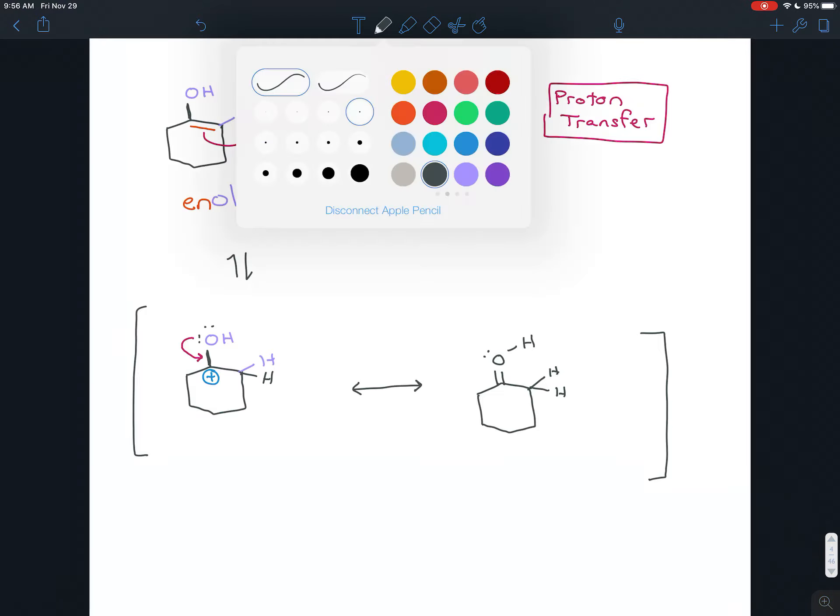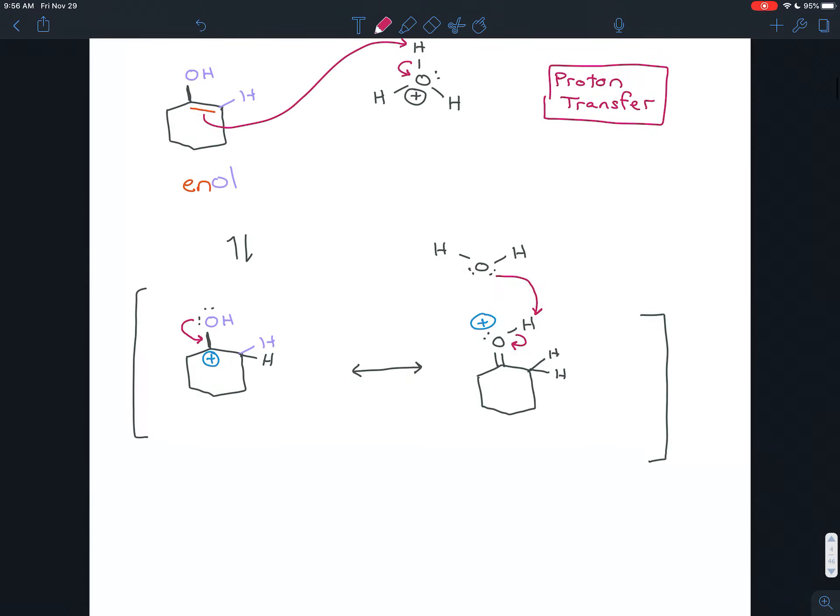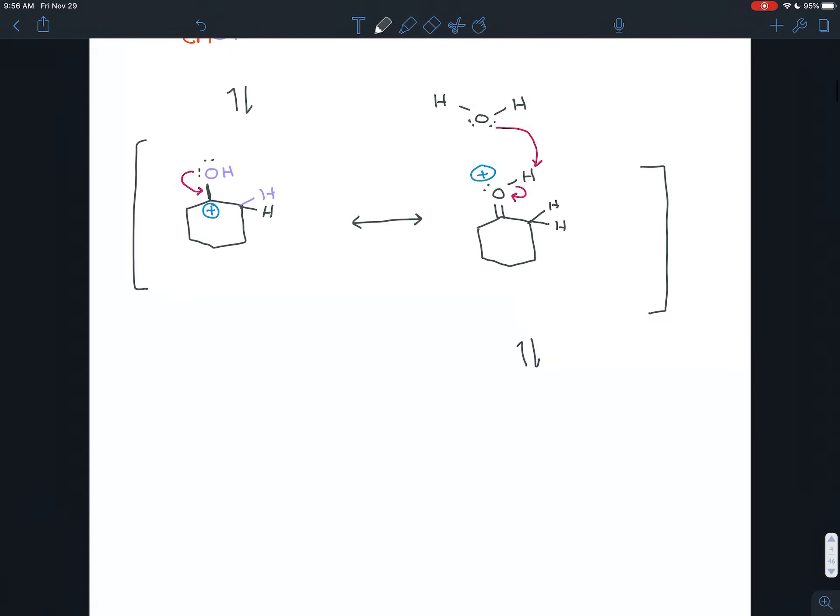This here. Notice that oxygen now has three bonds and therefore has a full positive charge. The other thing we have after the first step was that hydronium lost an H+, so it's going to be water. And the oxygen there will steal that hydrogen. The electrons will snap back onto the oxygen. And you can see how we would end up with the ketone.